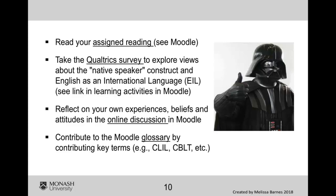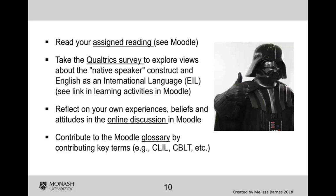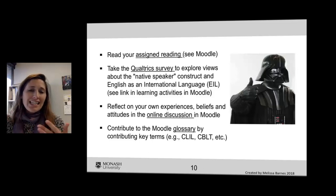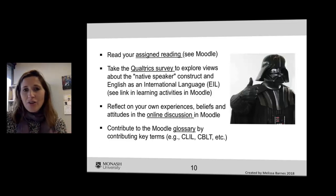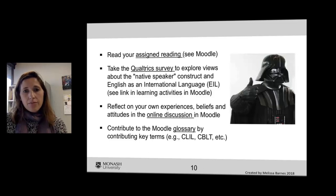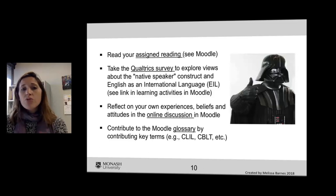This week, please look at your assigned readings — they should now be all available for you. If you have not received your textbook, it's by Jeremy Harmer and it's called The Practice of English Language Teaching. You can get that at the bookstore or have a look on Google — sometimes there are deals or secondhand books available. Take the Qualtrics survey — this is to get you thinking and exploring your views about what the native speaker construct is and more about English as an international language. It's anonymous, so it's just getting your ideas and we'll use that as a discussion point next week in the face-to-face tutorials. Also reflect on your own experiences, beliefs, and attitudes in the online discussion on Moodle.